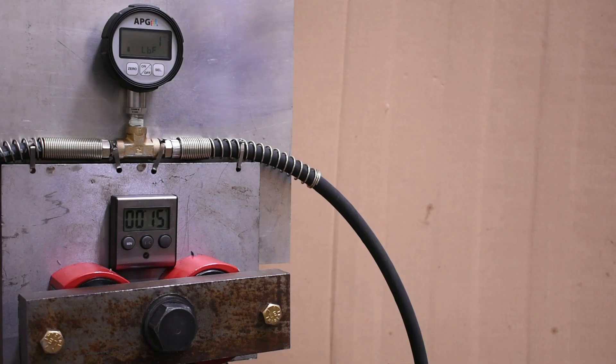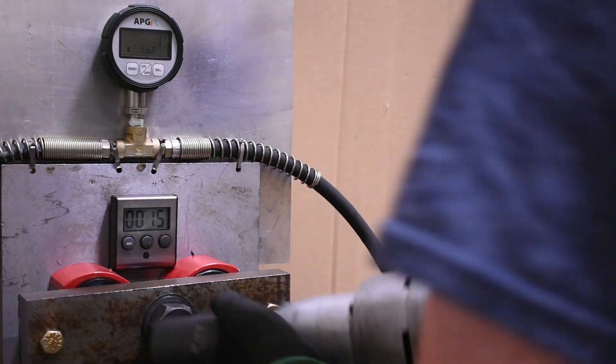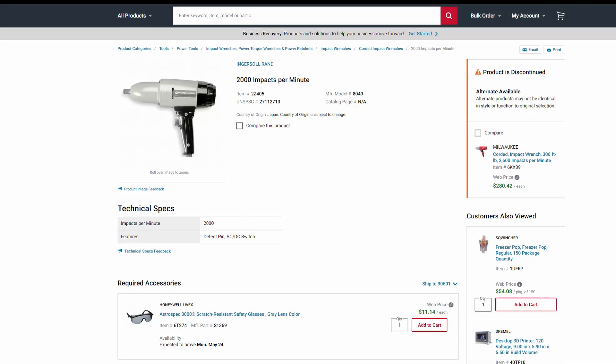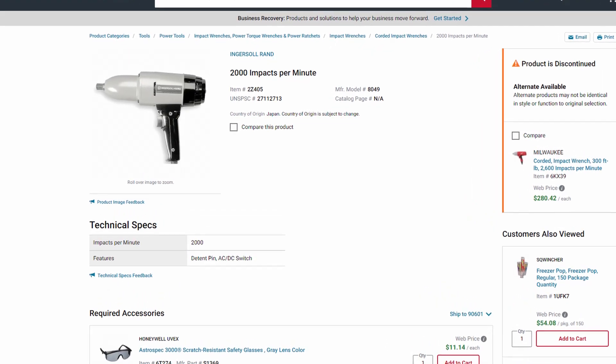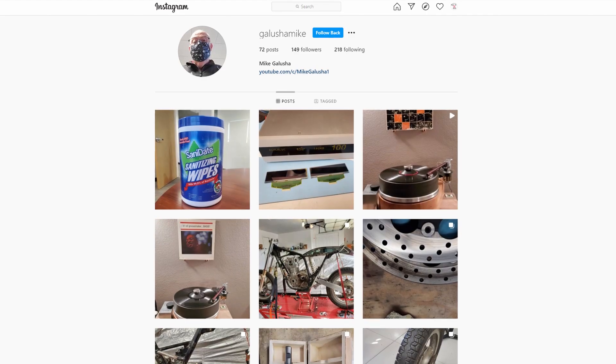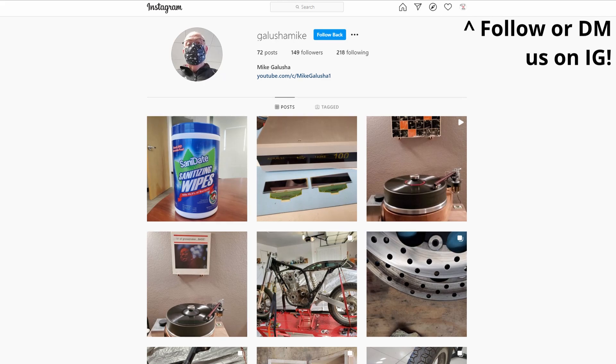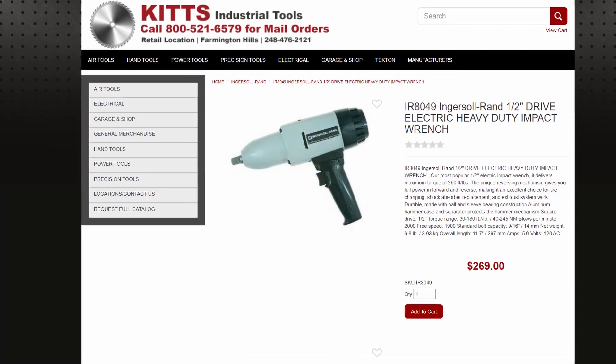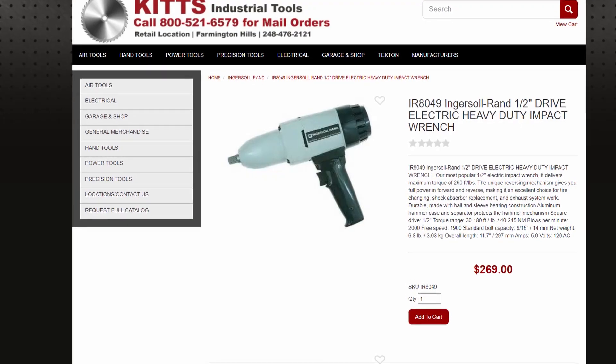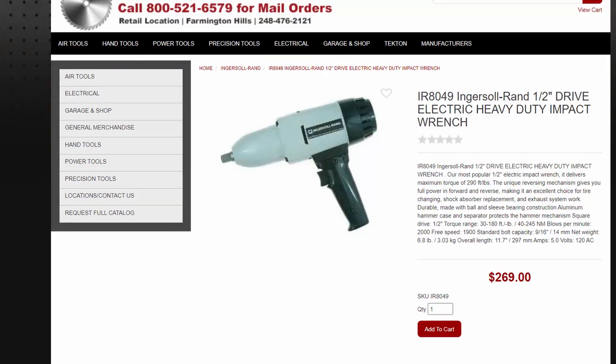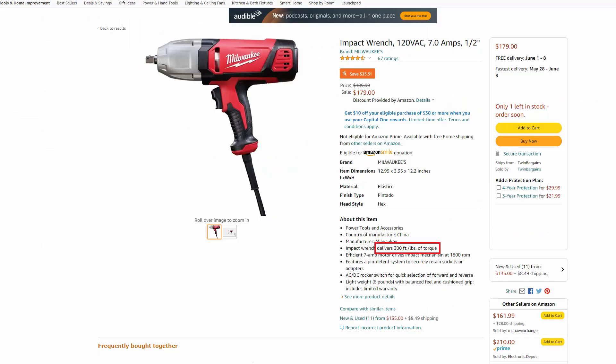For some extra context in this corded impact space, and to perhaps see how far we've come in the modern era with them, today we'll also be testing an Ingersoll Rand 8049 Model B, made in Japan around the early 90s, thanks to viewer Galusha Mike on Instagram who gave us his own and even shipped it himself. This model, which could have been featured in a commercial with Vanilla Ice at the time, is rated at only 5 amps, but still 290 foot pounds, which compares to a Milwaukee corded of today.